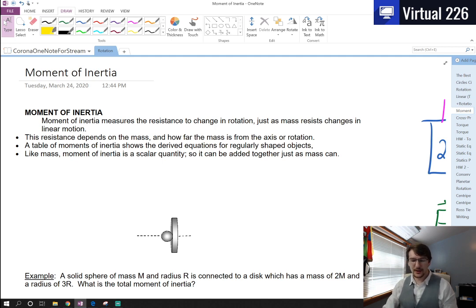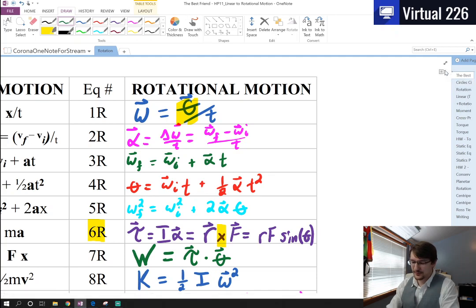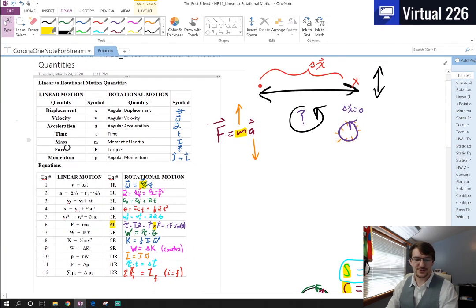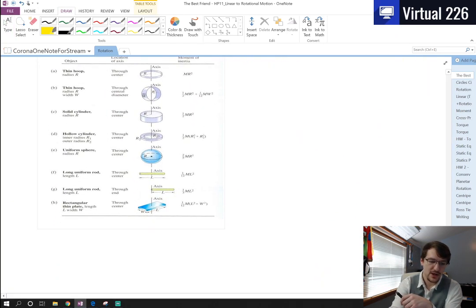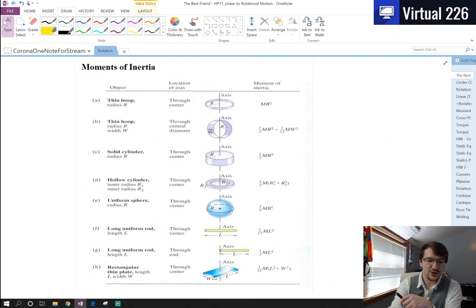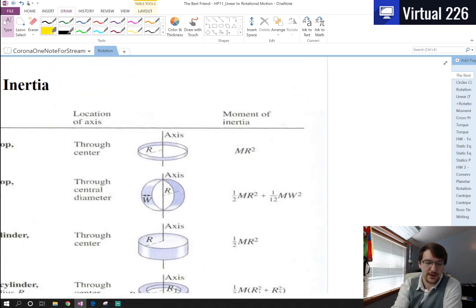When we think about moments of inertia, many objects have different moments of inertia. There are ways to calculate these, typically with calculus, but we're not doing that. If we go back to our sheet that had all these equations on it, at the very bottom there's a moment of inertia chart for us. Based on what shaped object you have, we know moments of inertia for them.